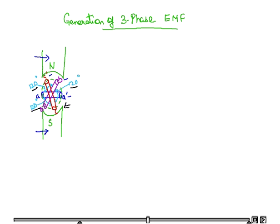Here ABC are the start terminals and A', B', C' are the finished terminals of the coils.